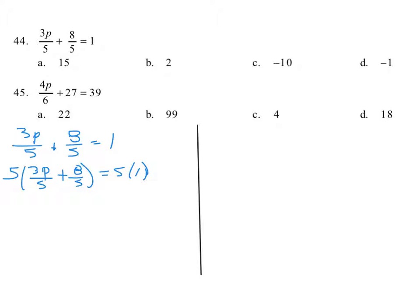And we'll distribute. We'll say 5 parenthesis 3p over 5 plus 5 parenthesis 8 over 5 is 5 over 1.